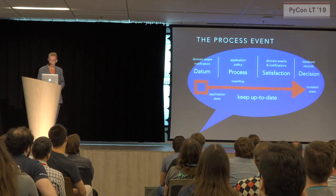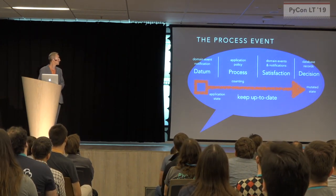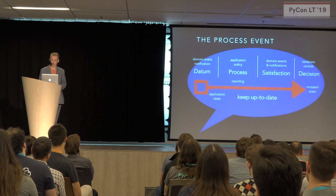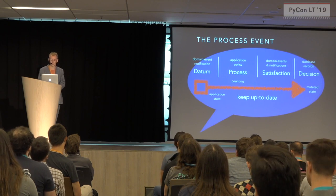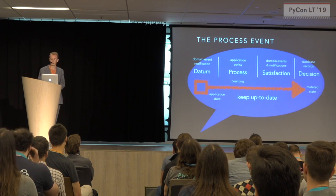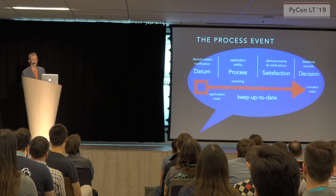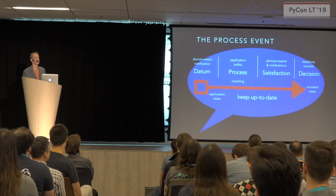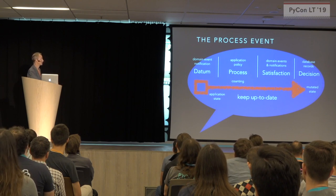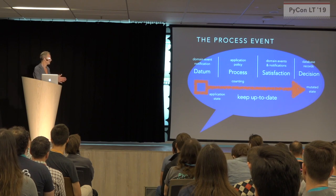Here's that process event drawn as an event in the same shape as Whitehead's event with the four stages. The subjective aim is perhaps to keep up to date. The datum is more or less the domain event notification, the current application state, and the application policy itself. The process is to apply the application policy whenever there is a new domain event notification. The satisfaction is the new domain events that satisfy the application policy. And the decision is whether records of the process event are actually written into the database, or perhaps not, depending on infrastructure failure. You'll record the whole process event or not — and if you don't, when you resume, that's what you'll do, until it's done, and then you move on.